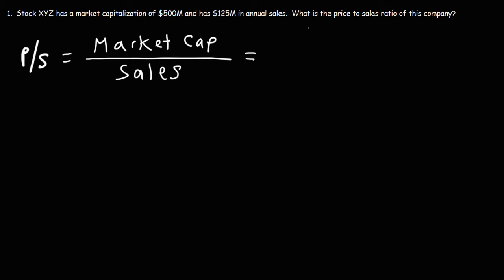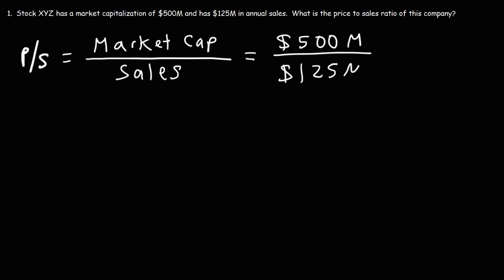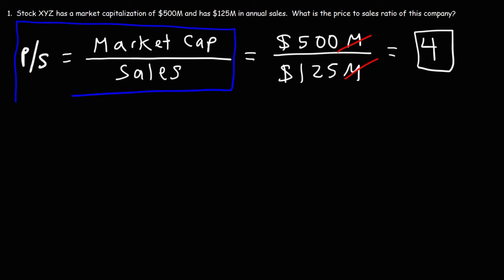So in this example, we have a market cap of $500 million and annual sales of $125 million. The units will cancel, so it's going to be $500 divided by $125. The answer is 4. So for this particular stock, the price-to-sales ratio is 4. And that's the formula you need to calculate the PS ratio.